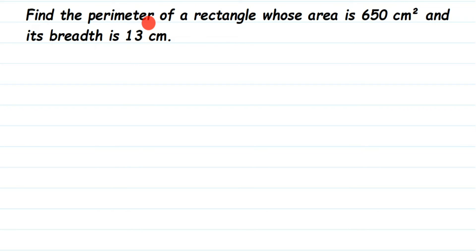To solve this question and find out the perimeter of the rectangle, first we need to find out the length. We're going to use the area of the rectangle — the area value given is 650 centimeter square — along with the breadth to find out the length first.